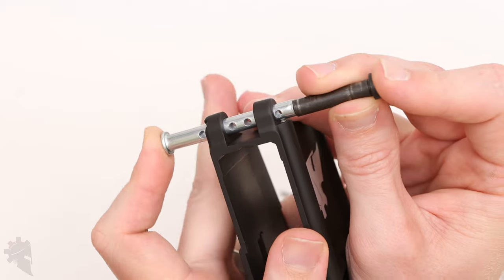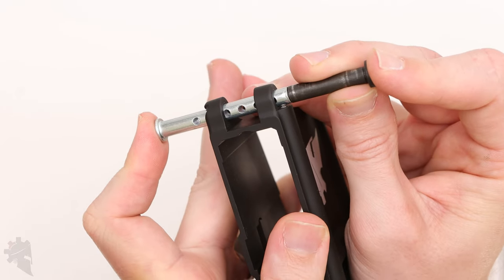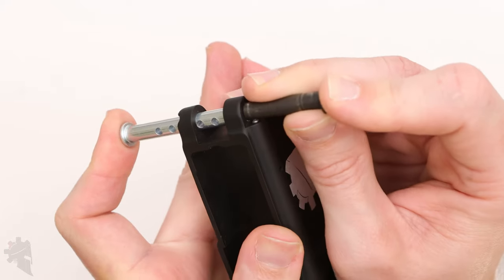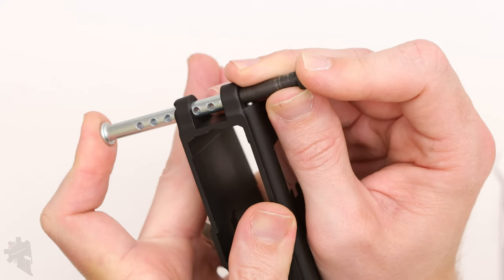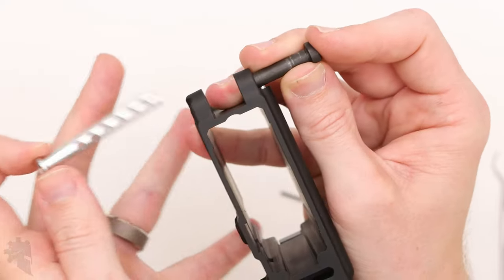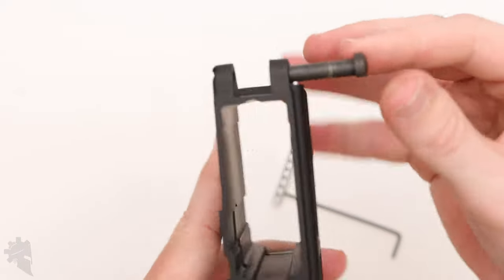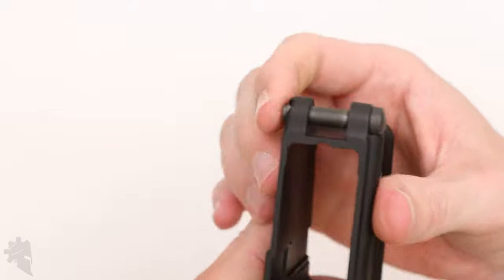And then I'm going to slide the takedown pin over the top of the clevis pin like so. So now my takedown pin is captured by that spring and detent and is now installed.